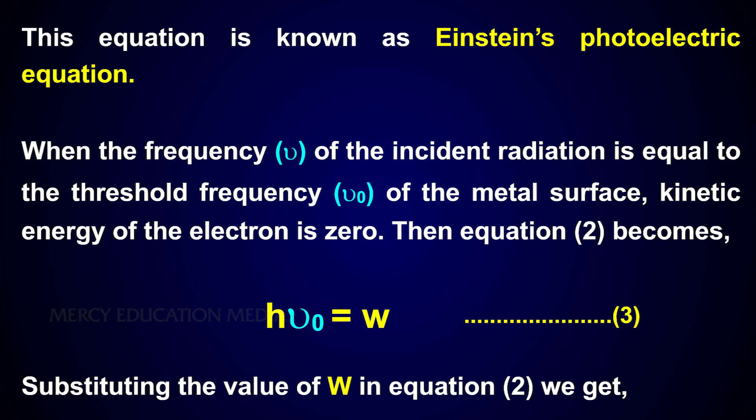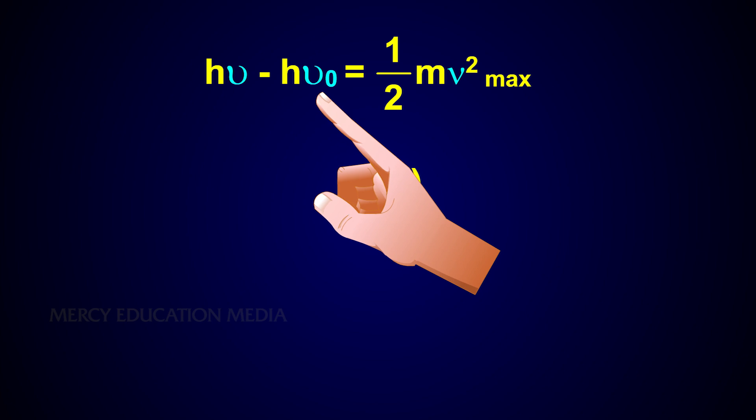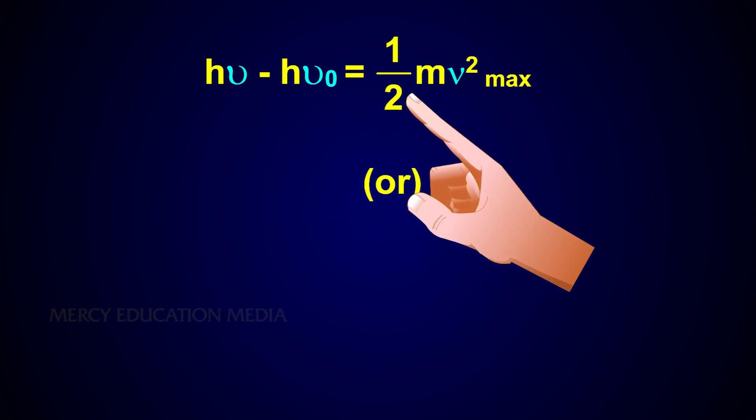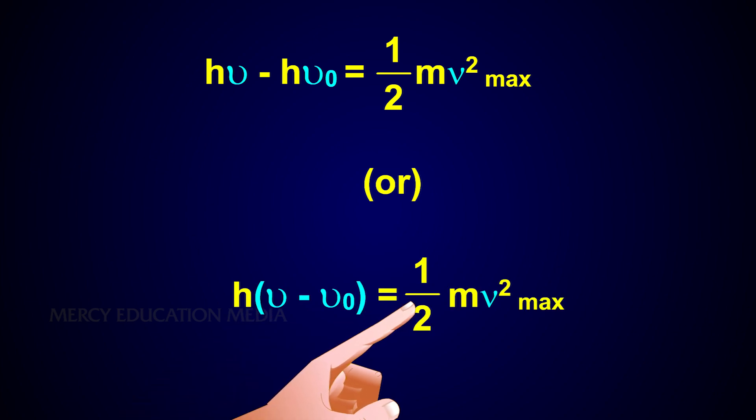Substituting the value of W in equation 2, we get hν - hν₀ = ½mv²_max, or h(ν - ν₀) = ½mv²_max. This is another form of Einstein's photoelectric equation.